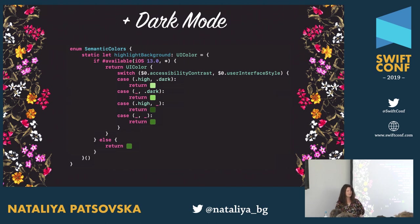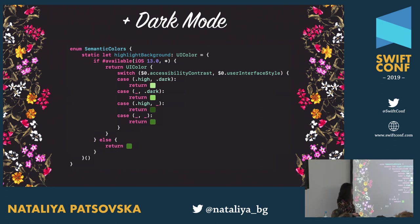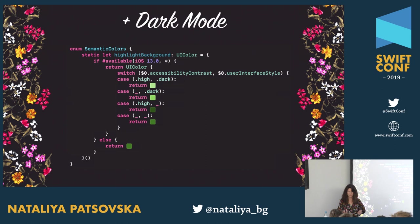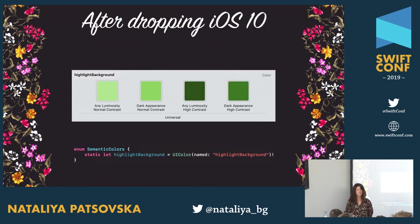Now we've added high contrast. If you want to add dark mode as well, you can extend the highlight color and switch on both accessibility contrast and user interface style. With user interface style, you get dark, light, and unspecified. You can default to the same color for iOS prior to 13, giving you nice compatibility. And again, if you drop iOS 10, you can move to the asset catalog.